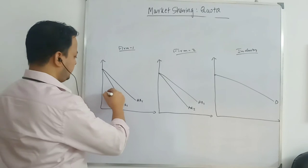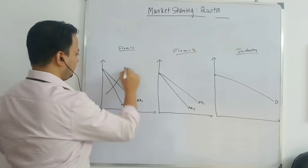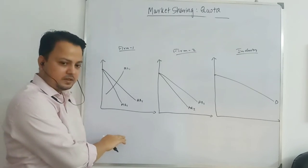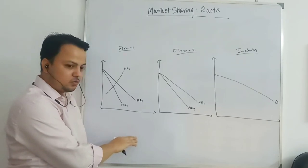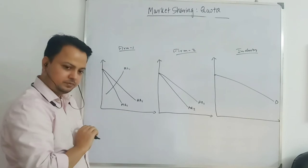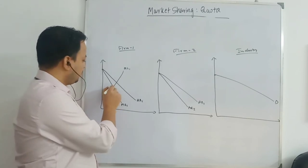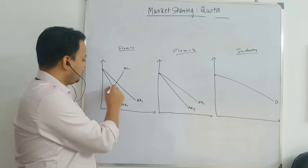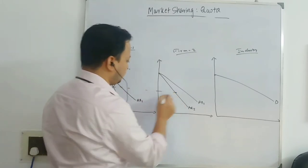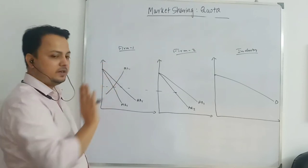This is the marginal cost of firm one. The condition we wrote is that the marginal cost of the industry must equal the marginal cost of the firm. When both have identical costs, this marginal cost curve must be the same for firm two also — because we assumed both firms have identical cost.